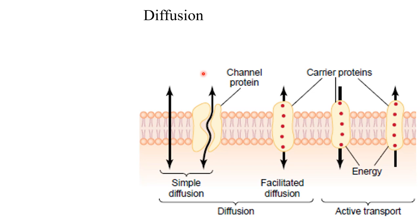For simple diffusion: lipid-soluble substances pass through directly, and when something goes through the channel it is also simple diffusion — not rate-limiting. Rate depends on concentration gradient. More concentration gradient, more diffusion. Surface area is high, higher is the rate. Thickness of the membrane — inversely proportional: if the membrane is more thick, rate of diffusion is less. Facilitated diffusion goes through carrier protein — it is rate-limiting. Rate depends on how many carriers are available and concentration difference. Carrier protein is also used for energy-driven active transport.